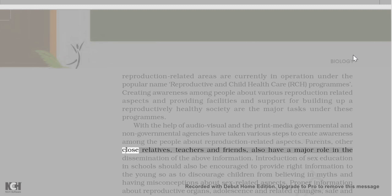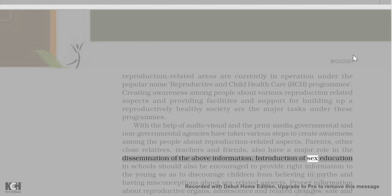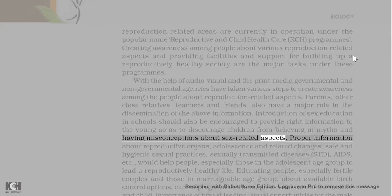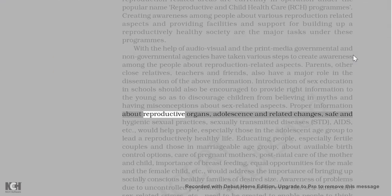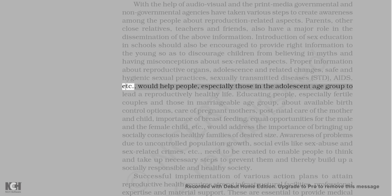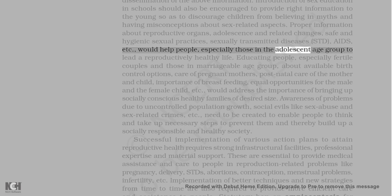Parents, other close relatives, teachers, and friends also have a major role in disseminating reproductive health information. Introduction of sex education in schools should be encouraged to provide the right information to the young, discouraging myths and misconceptions about sex-related aspects. Proper information about reproductive organs, adolescence and related changes, safe and hygienic sexual practices, sexually transmitted diseases (STDs), and AIDS would help people, especially adolescents, lead a reproductively healthy life.